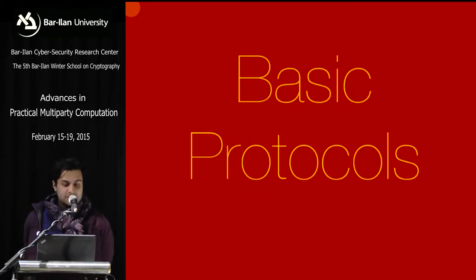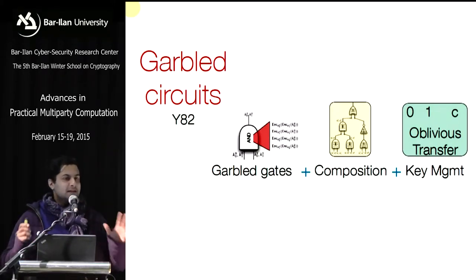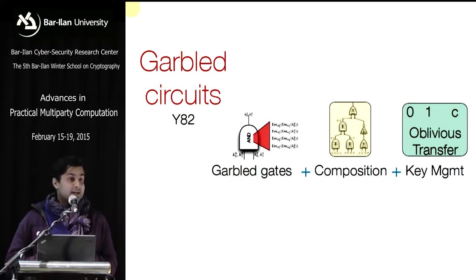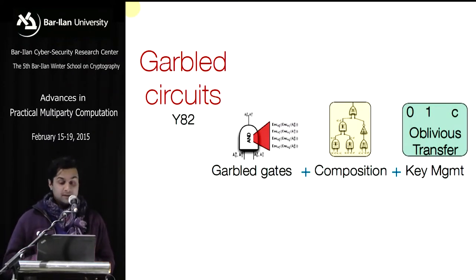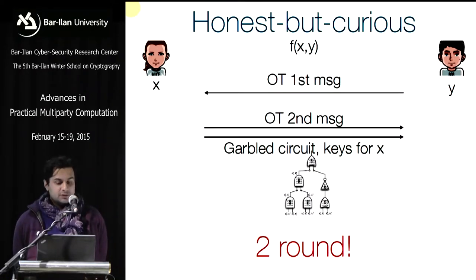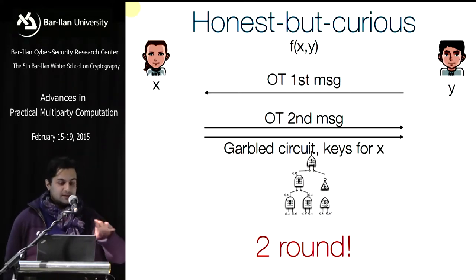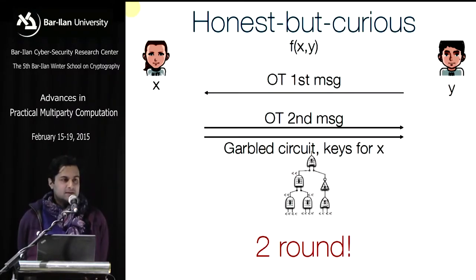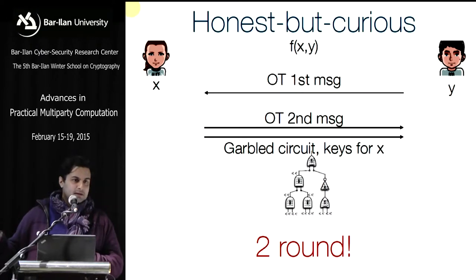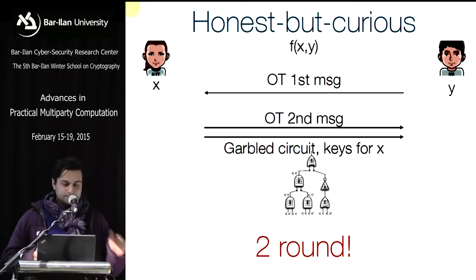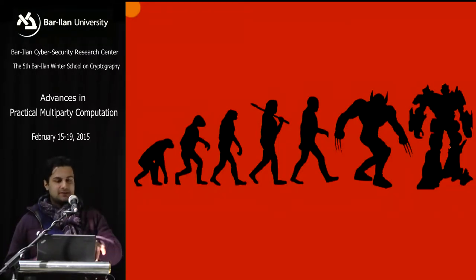Let's go over some basic protocols. Garbled circuits can be mentally organized around three ideas: garbling for garbled gates (randomized encoding), a way of composing these, and key management via oblivious transfer. In the honest-but-curious setting, one can do an OT for key management and send a garbled circuit in two rounds — a delegation model. This is when only one party gets the output; if both need it, a third round is required.